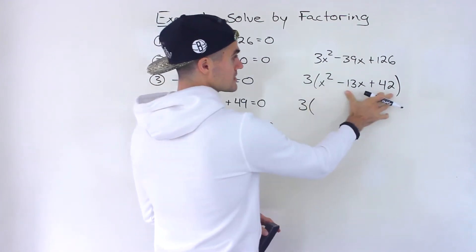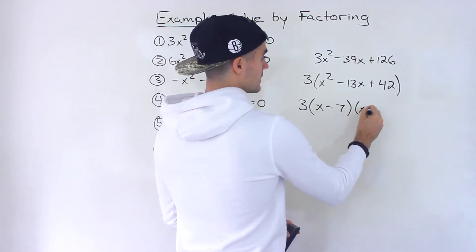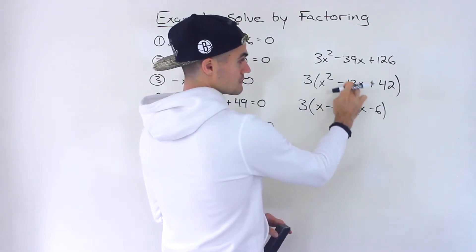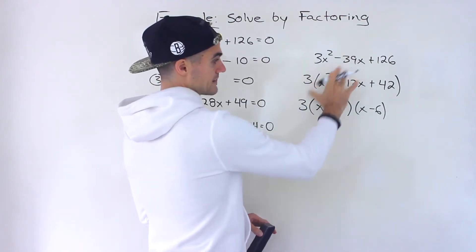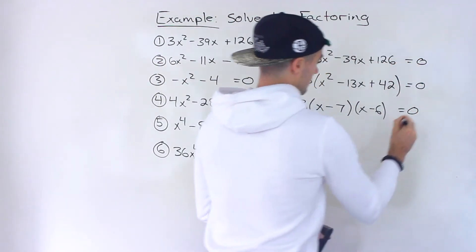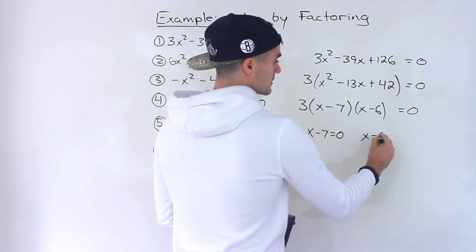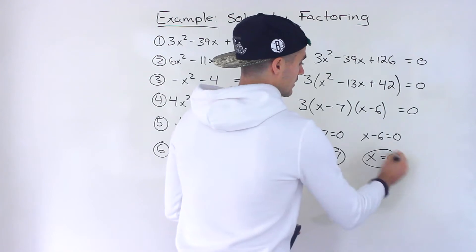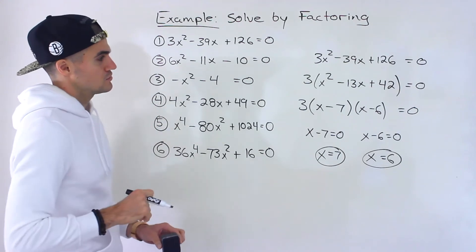That inner trinomial factors into x minus 7 times x minus 6. Negative 7 times negative 6 gives us 42, and negative 7 plus negative 6 gives us that negative 13, the b value. So that's the left side fully factored. Setting each factor equal to zero, x minus 7 equals zero or x minus 6 equals zero, giving us x equals 7 and x equals 6 as the two solutions to number one.